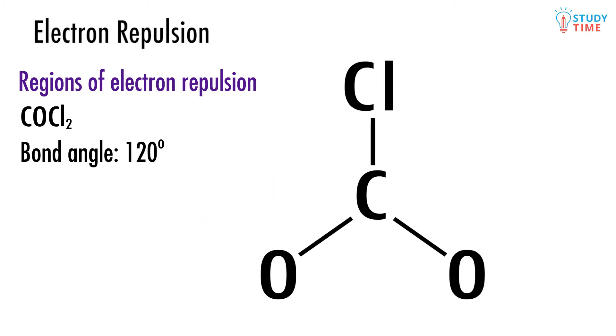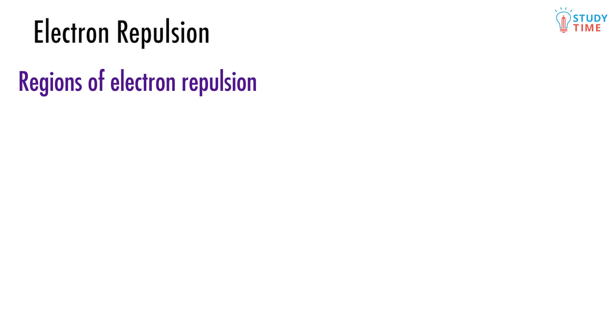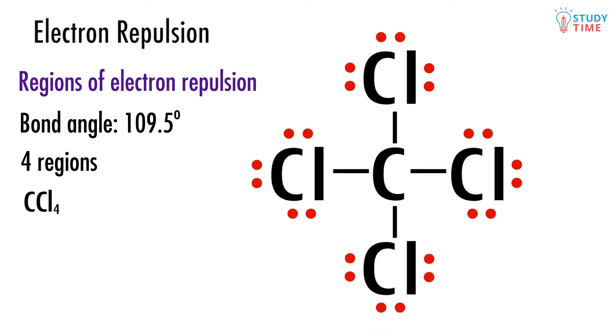Finally, it's possible for there to be four areas of electron repulsion around a central atom. When this happens, the resulting bond angle is 109.5 degrees. An example of a molecule where there are four regions of electron repulsion is CCl4, which has this Lewis structure.